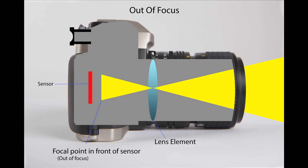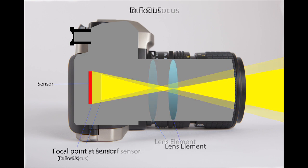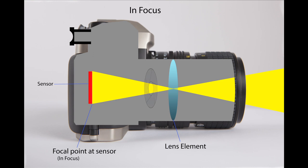Keep in mind, this is a very simplified demonstration of a lens. Most lenses will have multiple optical elements inside them, sometimes more than 20. Along with these optical elements is another critical piece of the lens called the aperture.